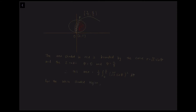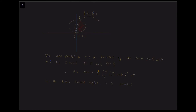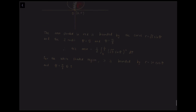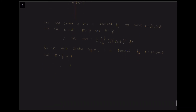The white shaded part is associated with the curve r equals 1 plus cos theta, with boundaries between pi over 3 and pi. So the white shaded area equals half times the integral of (1 plus cos theta) squared d theta, with boundaries pi over 3 and pi. The total area contained between the two curves is the sum of these two separate areas — the red and the white.